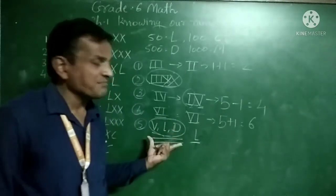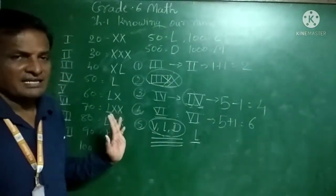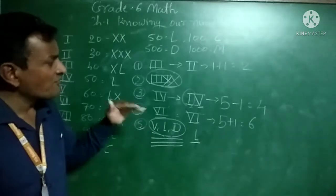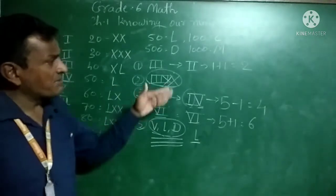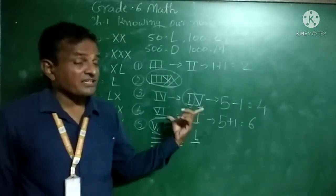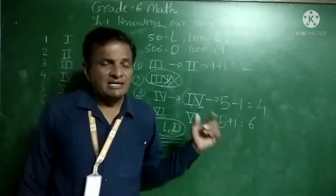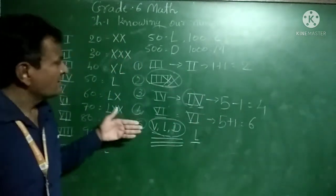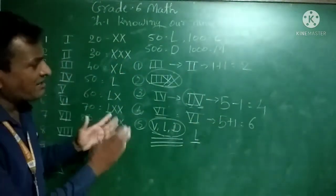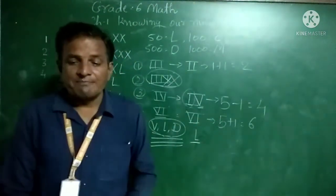Also, for these three symbols V, L, and D — there is no repetition. They are never repeated. Everyone understand the rules for writing Roman numerals? Now we will learn how to write Roman numerals with some examples.